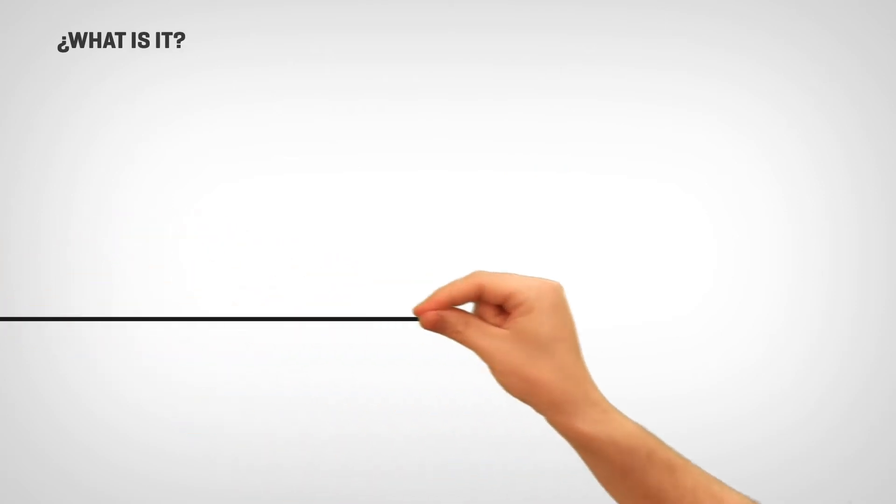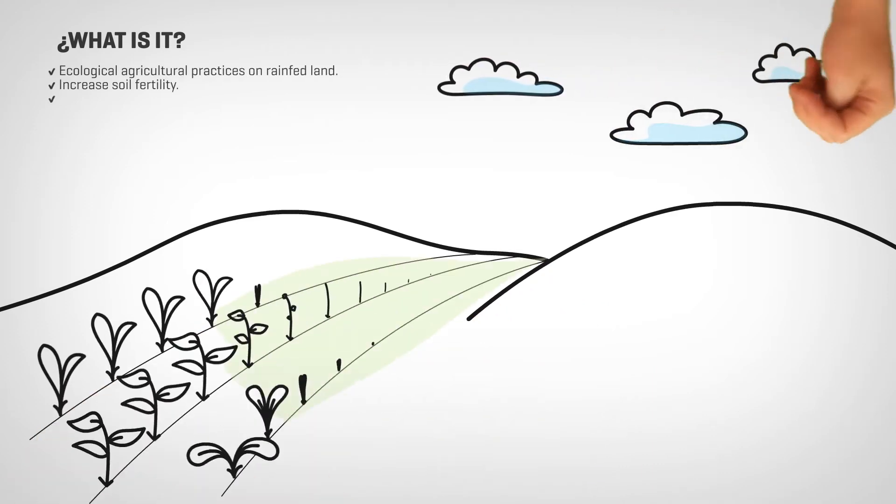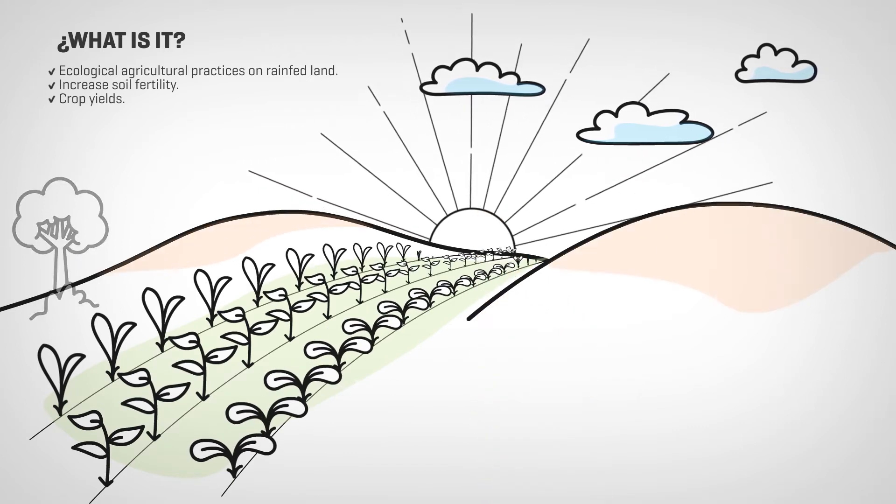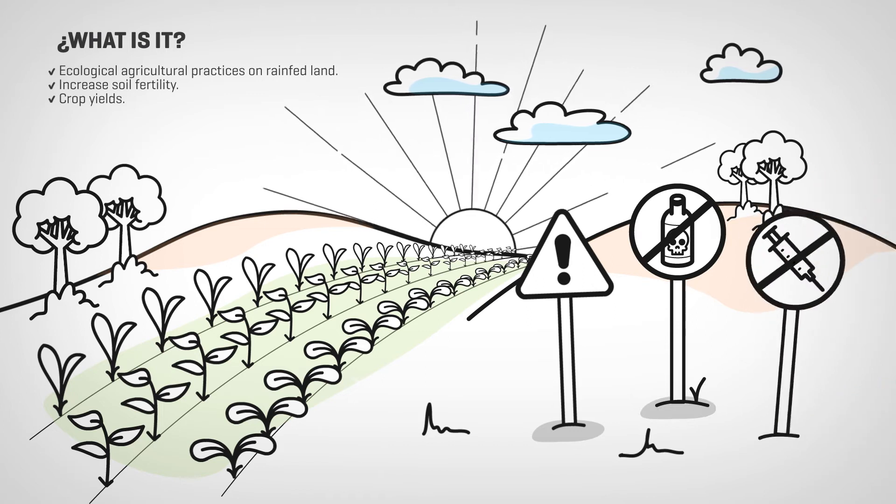What is it? Crops for Better Soil seeks to demonstrate that ecological agricultural practices on rain-fed land can increase soil fertility and crop yields while avoiding the use of chemical fertilizers, pesticides, and genetically modified organisms.